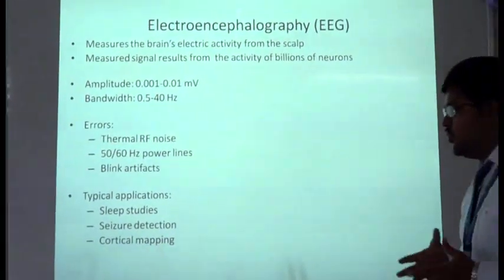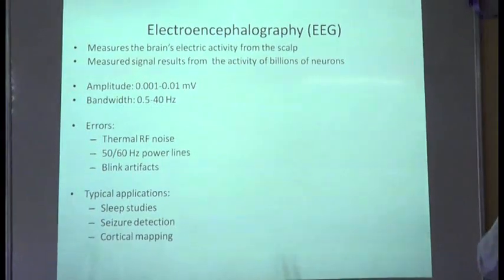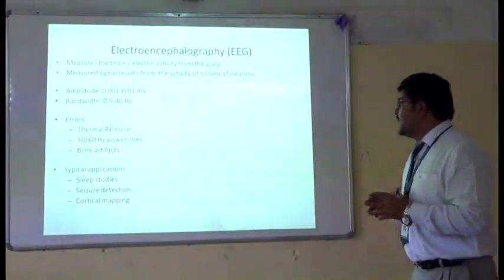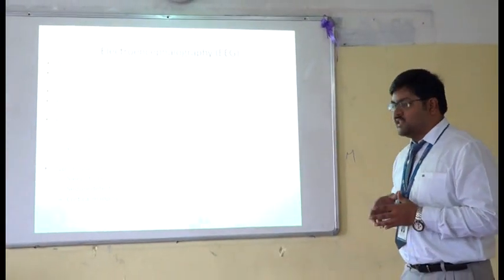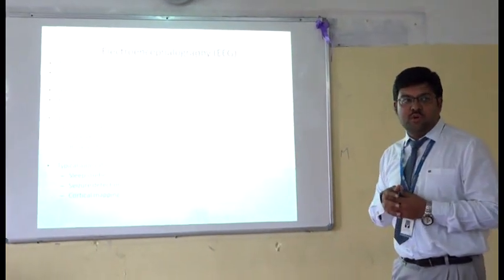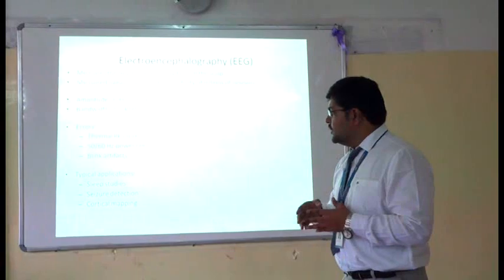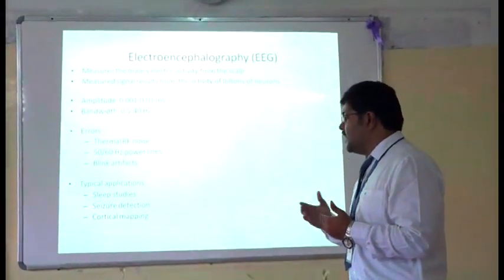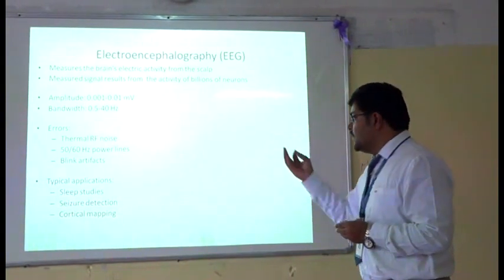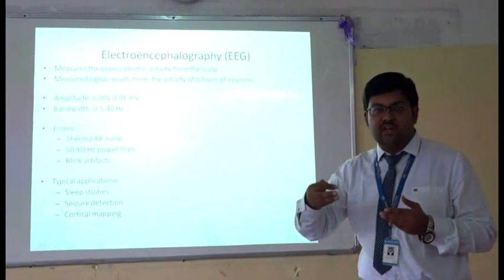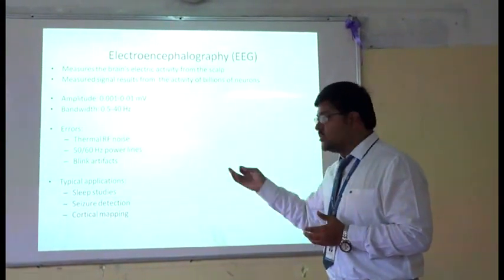Next is the Electroencephalogram, also called EEG, which is the measurement of the brain's electrical activity from the scalp. The measured signal results from the activity of billions of neurons. Its amplitude is between 0.001 to 0.01 millivolt, and its bandwidth is between 0.5 to 40 Hz. Noise sources in EEG include thermal RF noise due to heating of the electrodes or the EEG system, electrical interference noise at 50 to 60 Hz, and blink artifacts caused when the patient blinks during recording.